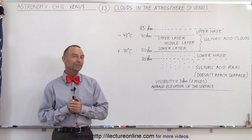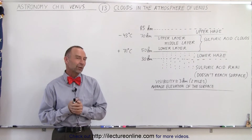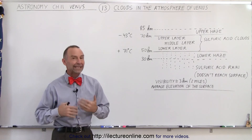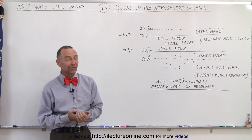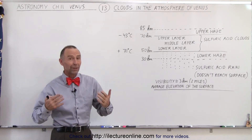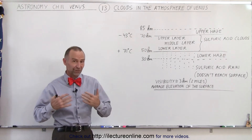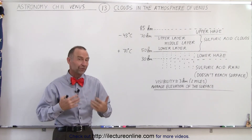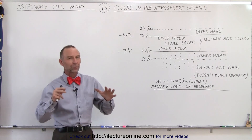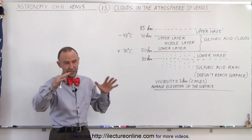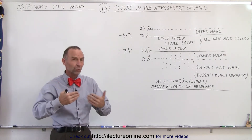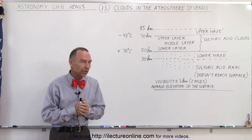Welcome to ElectronLine. Now let's take a look at the clouds in the atmosphere of Venus. It's the clouds that prevent us from seeing the surface in visible light, and the only way that we're able to see what the surface looks like was to use radar technology.